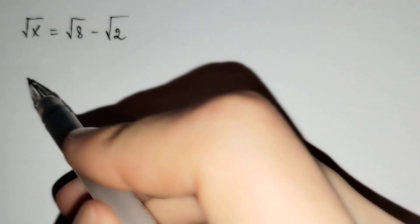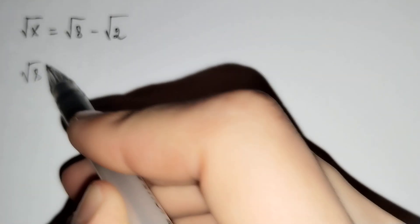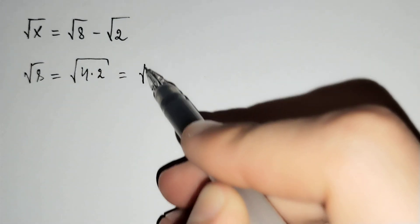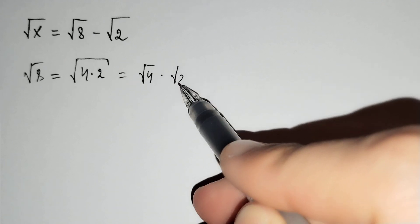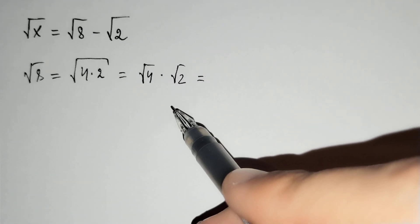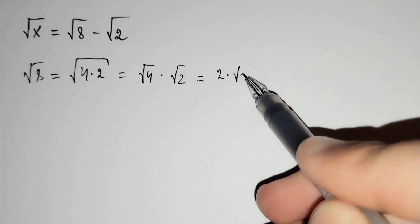Firstly, you know that the square root of 8 equals square root of 4 times 2, and it does the square root of 4 times square root of 2. The square root of 4 equals 2 times square root of 2.